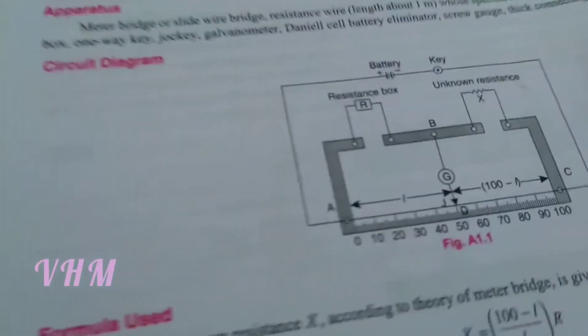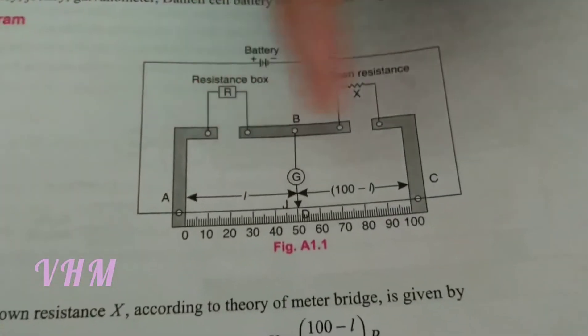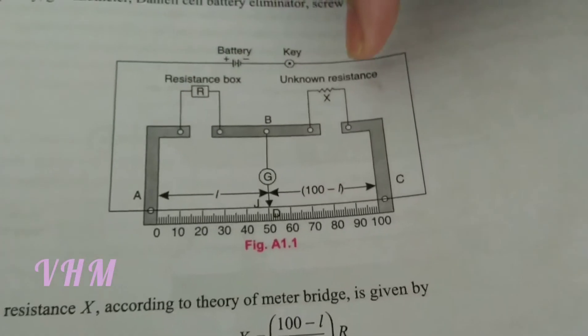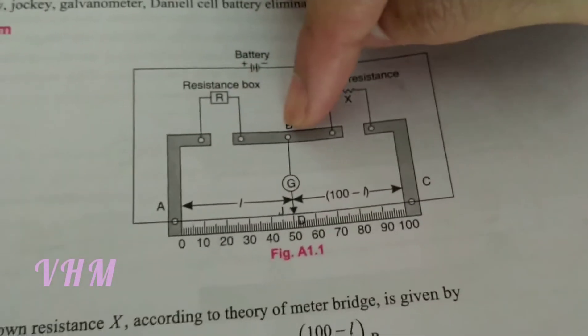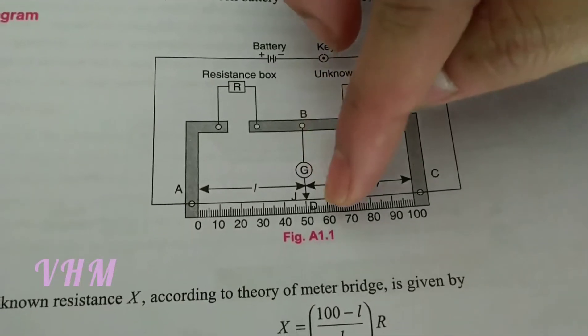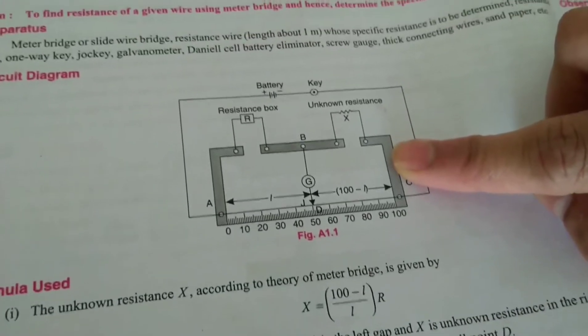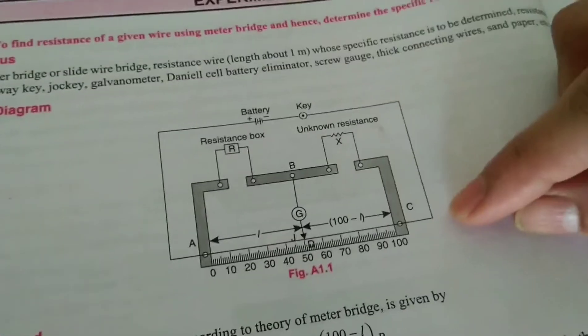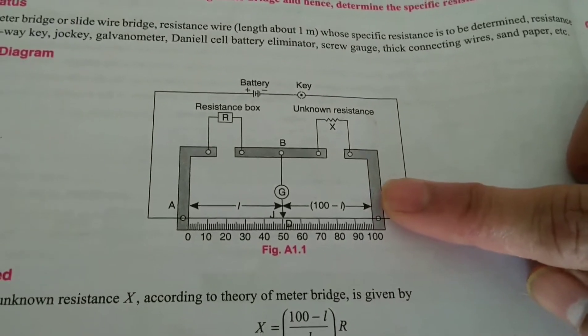And this is our circuit diagram for this experiment. Again meter bridge, gap, resistance box, unknown resistance, wire whose resistance is to be found, center point, galvanometer, jockey which is to be moved over there. So according to this circuit diagram, these apparatus have to be connected to find the required resistance.